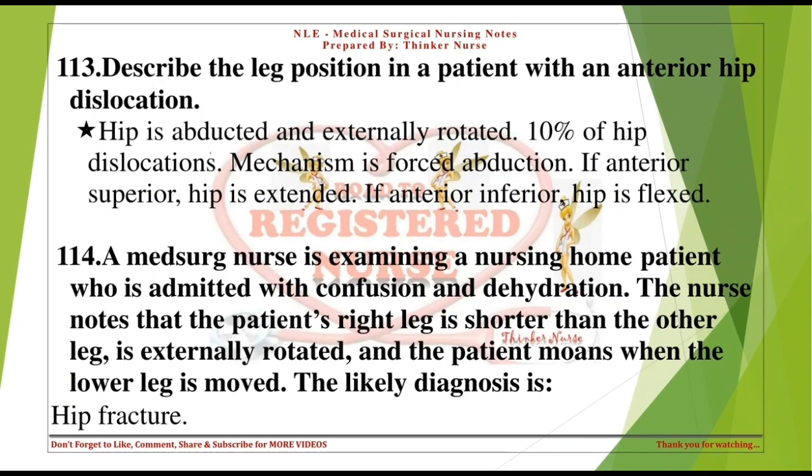Describe the leg position in a patient with an anterior hip dislocation: the hip is abducted and externally rotated, accounting for 10% of hip dislocations. Mechanism is forced abduction. If anterior superior, the hip is extended; if anterior inferior, the hip is flexed.